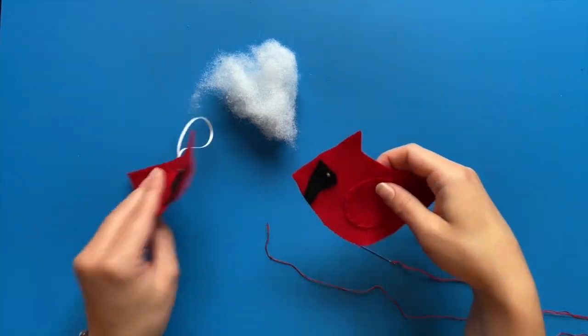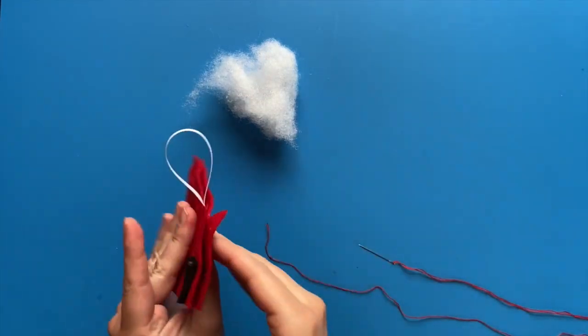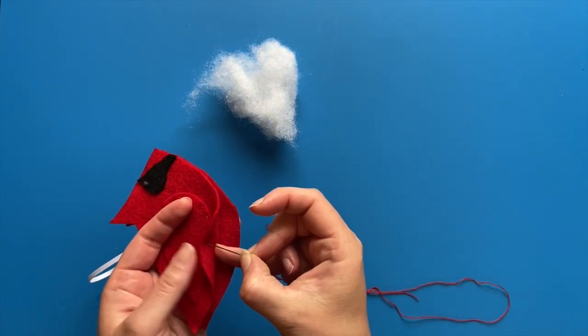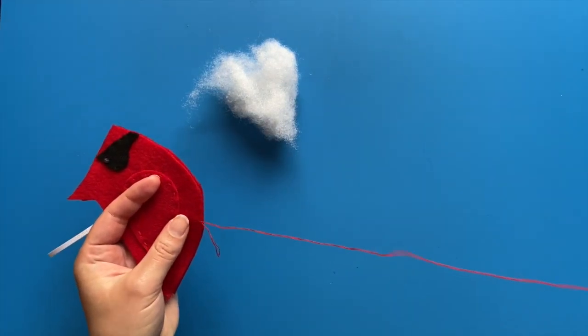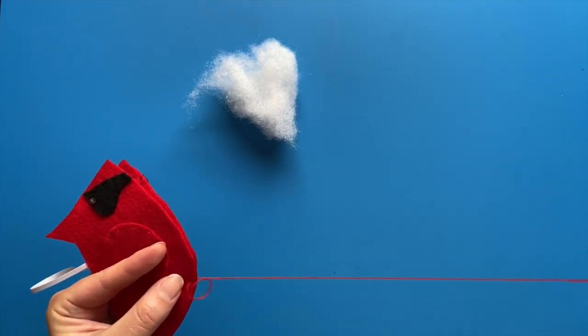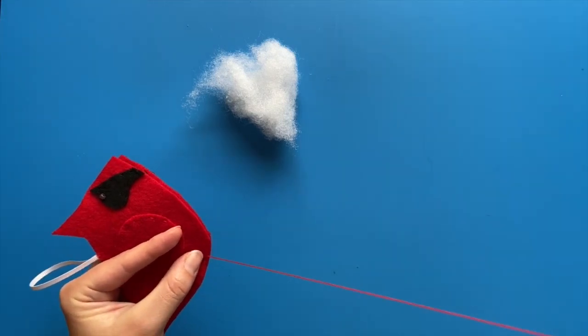To finish the bird, place both halves together so that the wings are on the outside. Line them up so that the edges match. Starting at the belly of the bird, pull your thread from the inside of the felt to the outside to start your first stitch, and hide the knot inside the bird.